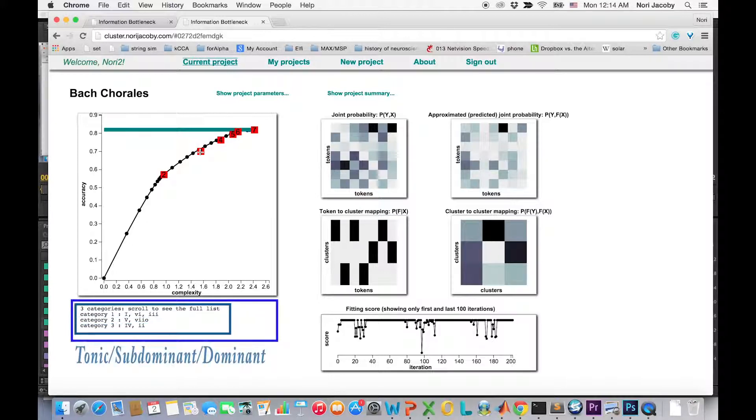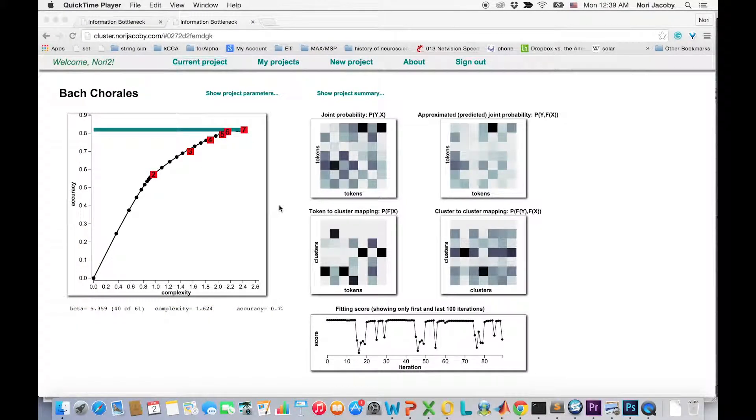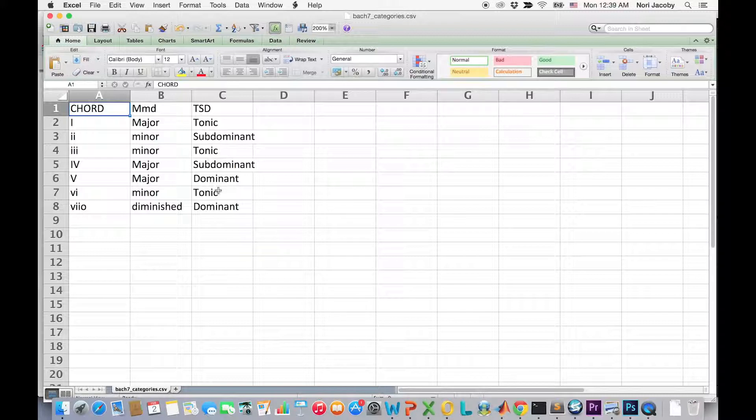Note that these categorization schemes are completely self-emergent, meaning that the only input was the joint distribution of chords from the corpus. We can also use the applet to compare the performance of predetermined categories. Here, for example, is a categorization to tonic, subdominant, and dominant as before, and a categorization according to the mode of the chord: major, minor, or diminished. I also save the categorization as a CSV file.